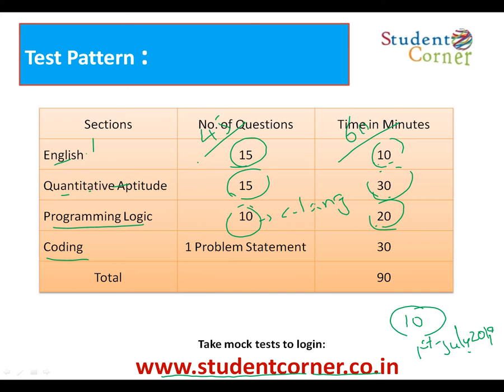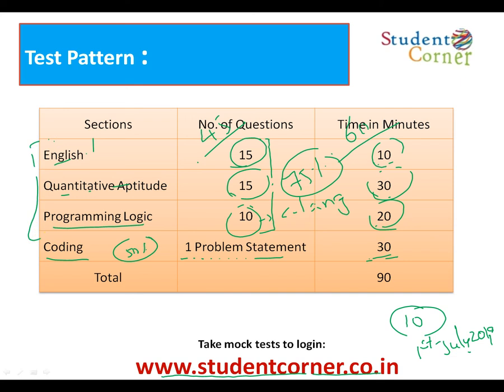The fourth section is Coding, which was added from last year onwards. They will provide one problem to be solved within 30 minutes. If you solve this problem, you will most probably be selected. Otherwise, scoring more than 75% in the first three sections is the minimum eligibility. Solving at least 50% of the coding problem will help you move to the next level. We will conduct 10 mock tests from 1st July 2019 onwards to help crack the first three sections, and the coding section will be explained on the YouTube channel Student Savvy IT Solutions.